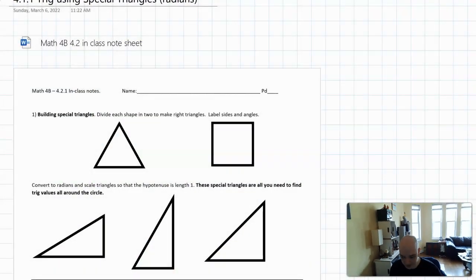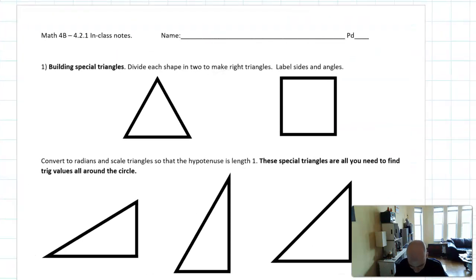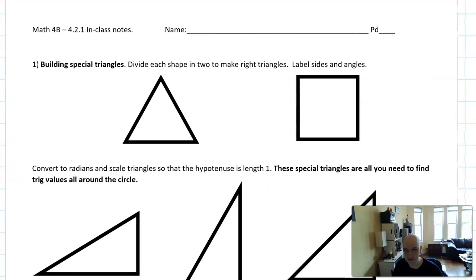Hello and welcome everyone. Today we're going to look at how to use special right triangles to evaluate trig functions in all quadrants using radians. There is a companion worksheet that goes along with this. If you need a copy, come see me or I will post it online.